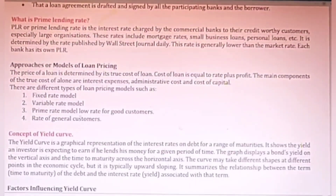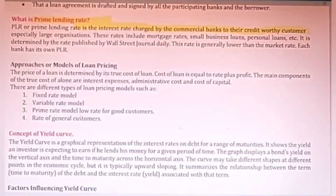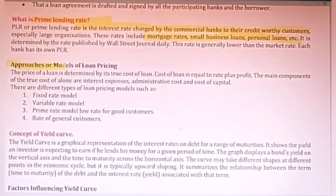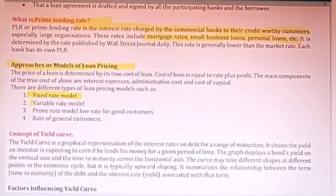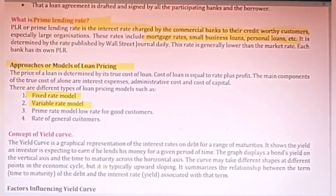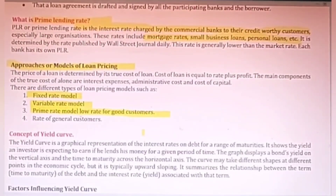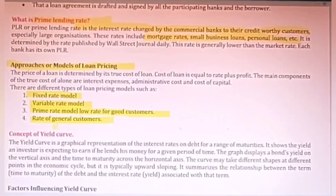A very important topic is Prime Lending Rate (PLR). This is the rate of interest charged by commercial banks to its customers. Basically these rates include mortgage rates, small business loans, and personal loans. A few approaches or models of loan pricing are there: a fixed rate model where interest rates are fixed throughout the time period; a variable rate where different customers are charged different rates; and a prime rate model where a smaller rate is charged to good customers, with a general rate for all other customers.